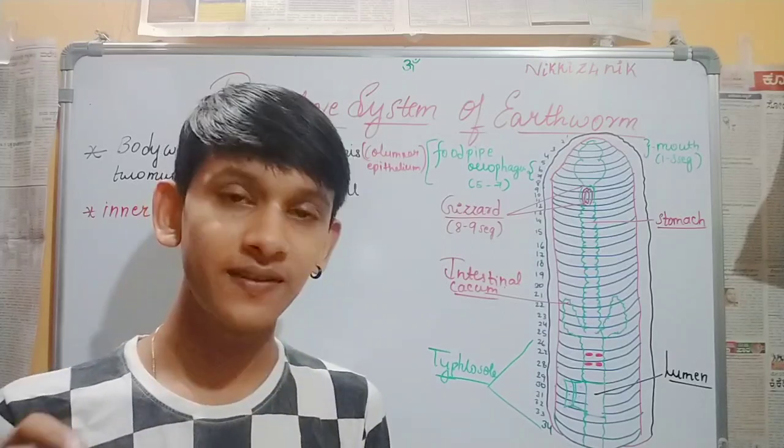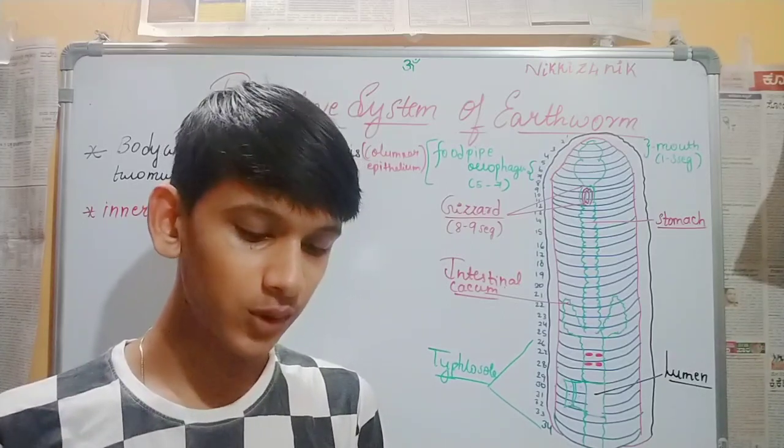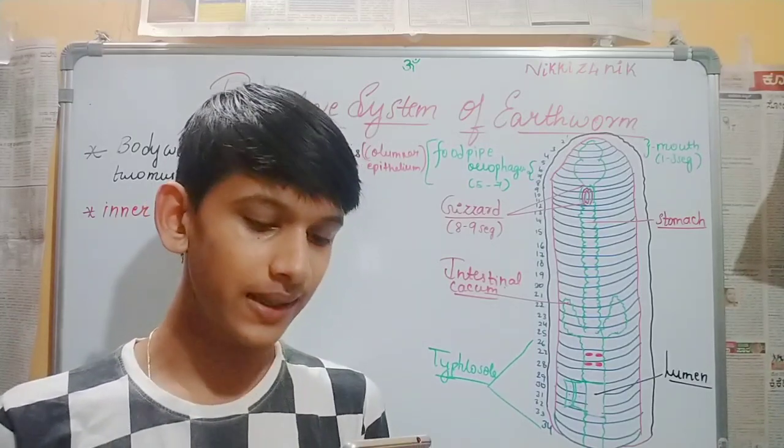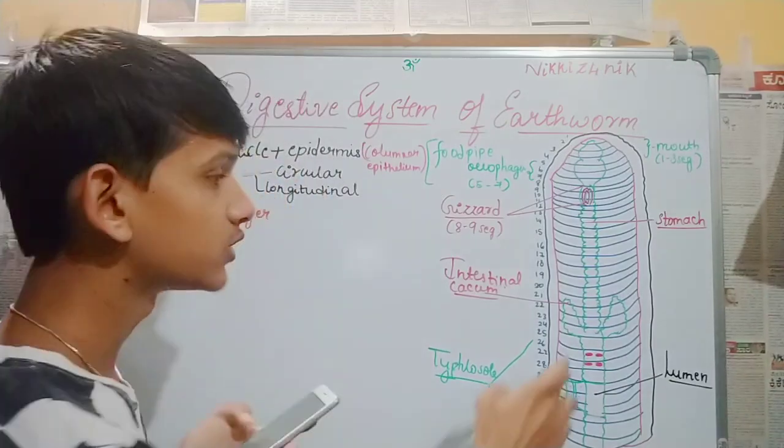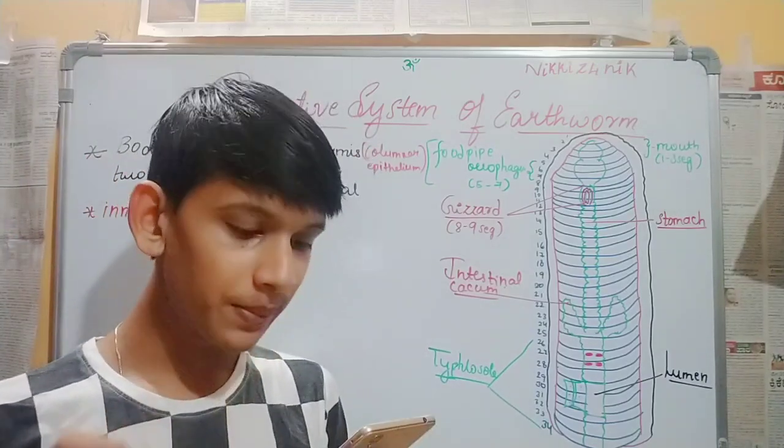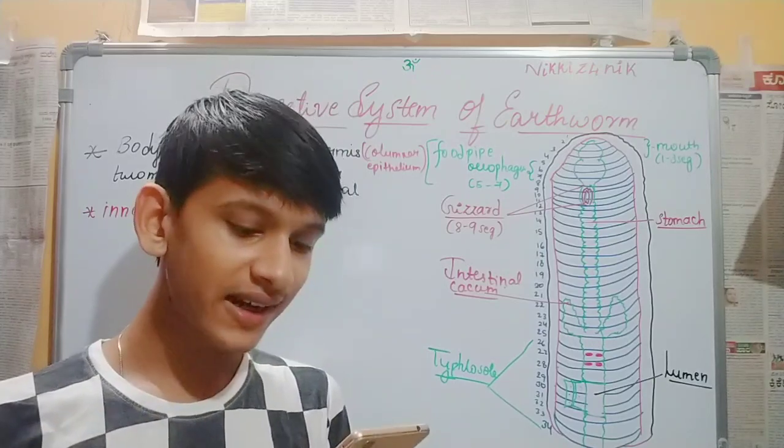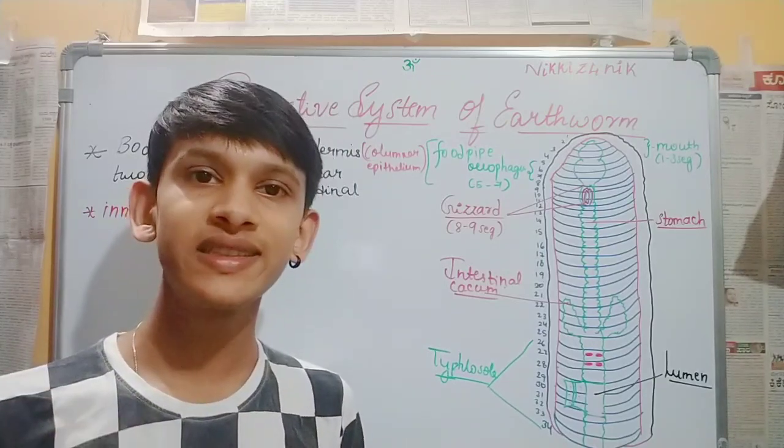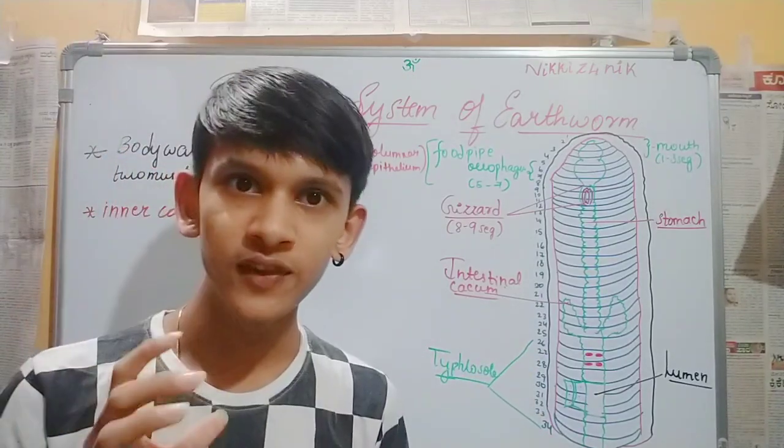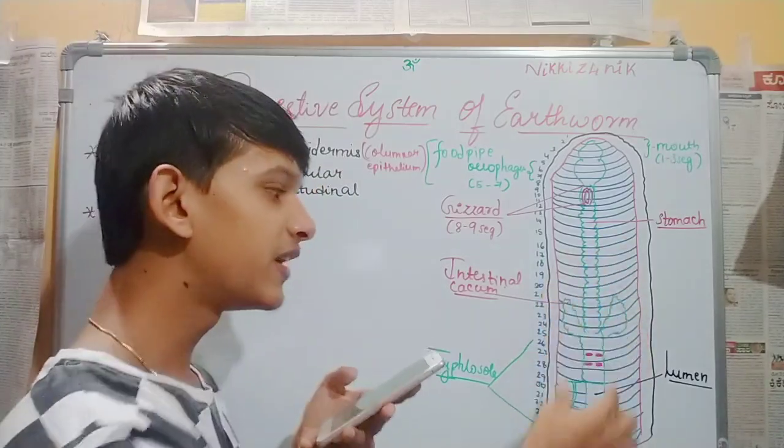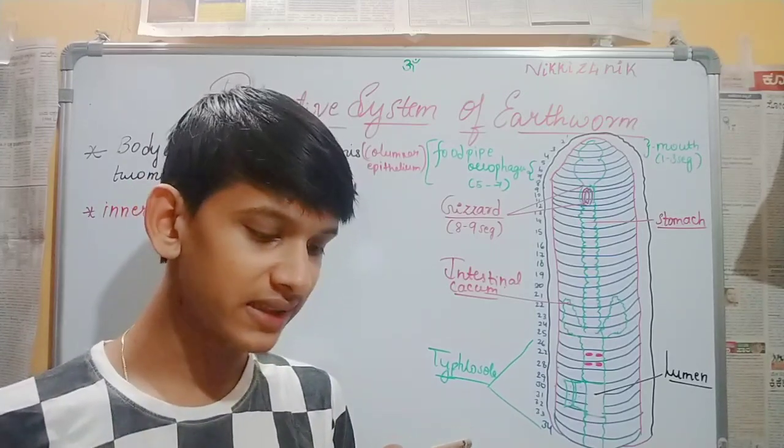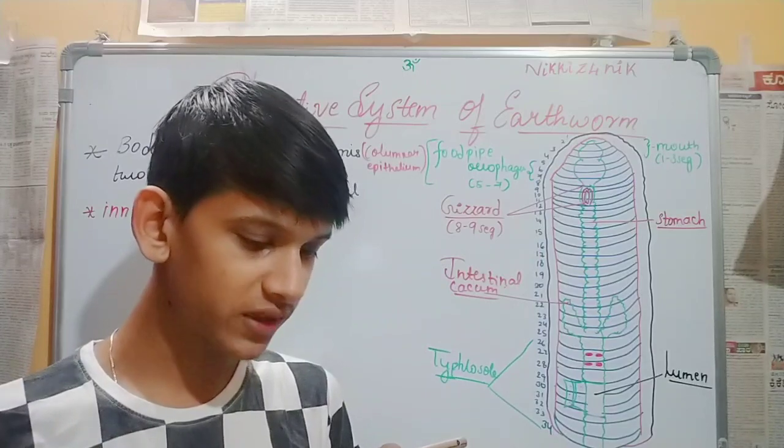The intestine starts from the 15th segment. A pair of short and conical intestinal cecae project from the intestine at the 26th segment for absorption. The characteristic feature of the intestine between 26 to 35 segments is the Typhlosole, which is folded. This increases the effective area of absorption in the intestine.